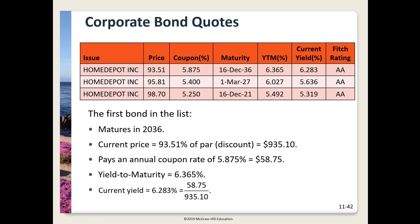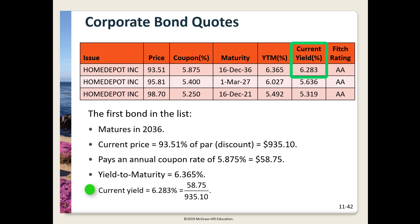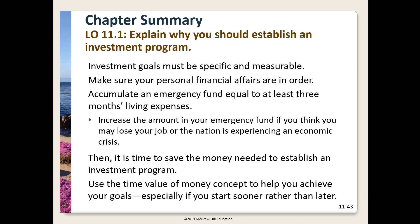Here is a sample of quotes for Home Depot bonds. Looking at the first bond, it matures on December 16, 2036. The current price is quoted as a percent of par — corporate bonds are assumed to have a face value of $1,000 — so 93.51% of par equals $935.10. The annual coupon rate is 5.875%, so the bond pays $58.75 annually, or half that every six months. The yield to maturity is 6.365%. Note that this bond is paying a coupon rate lower than the yield to maturity, which is why it's selling below par. The current yield equals $58.75 divided by $935.10, or 6.283%.